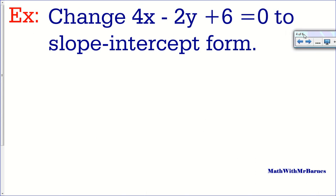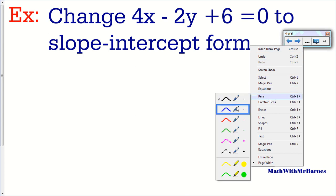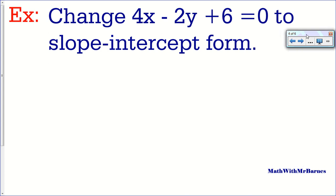So we have 4X minus 2Y plus 6 and we want to change it to slope-intercept form. First of all we need to recognize that this is general form. And we need to recognize what slope-intercept form is — slope-intercept form is Y is equal to MX plus B. So we need to solve this equation for Y.